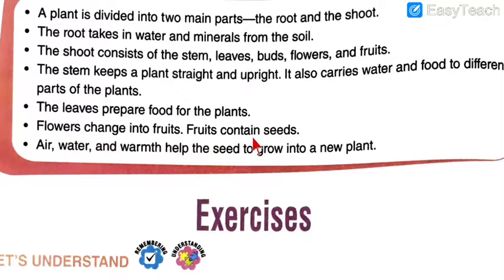Flower changes into the fruit. Fruit contains seeds. Not all, but few flowers change into the fruit — as shown in the textbook, the apple flower changes into the apple fruit, which then has a seed. If you again sow the seeds into the ground, it will grow into another plant. This is how reproduction also takes place for the plant. Air, water and warmth help the seed to grow into the new plant. For the process of germination, these three things are very much important: air, water and warmth. This was the summary which covers every single point in brief.